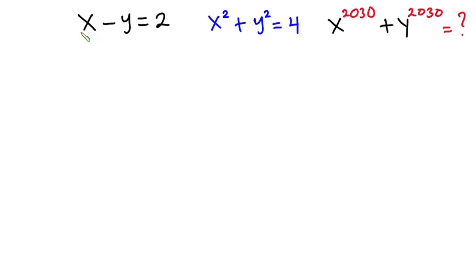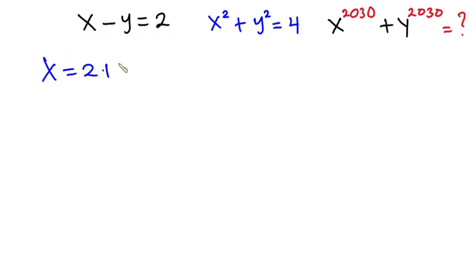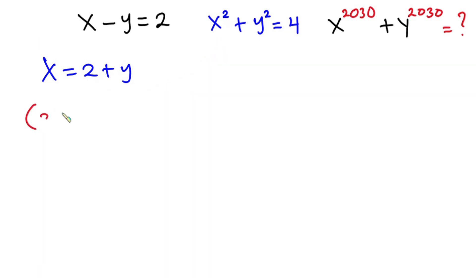So from the first approach, let's make x the subject from this equation. So we have x is equal to 2 plus y. Now let's plug the value of x from this equation into the second one. So we have 2 plus y, all squared, then plus y squared is equal to 4.